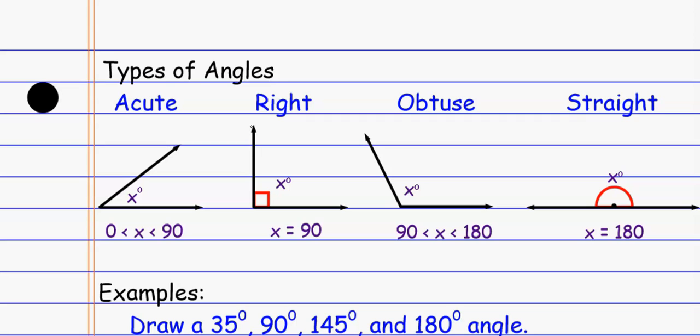If I have a line, it's a straight angle, it's 180 degrees. So acute zero to 90, right is when we get to 90, obtuse is 90 to 180, and straight is 180 degrees.